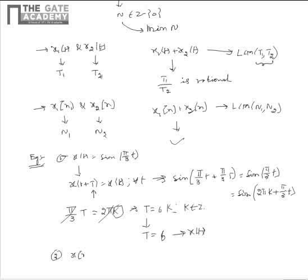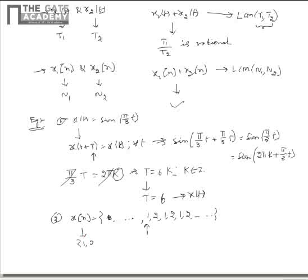Now consider a discrete-time signal X(n) which is an infinite sequence repeating the pattern 1, 2. The instant n = 0 corresponds to the value 1. We see that X(n) is a repetition of 1, 2, so X(n) is periodic with a period of N = 2.